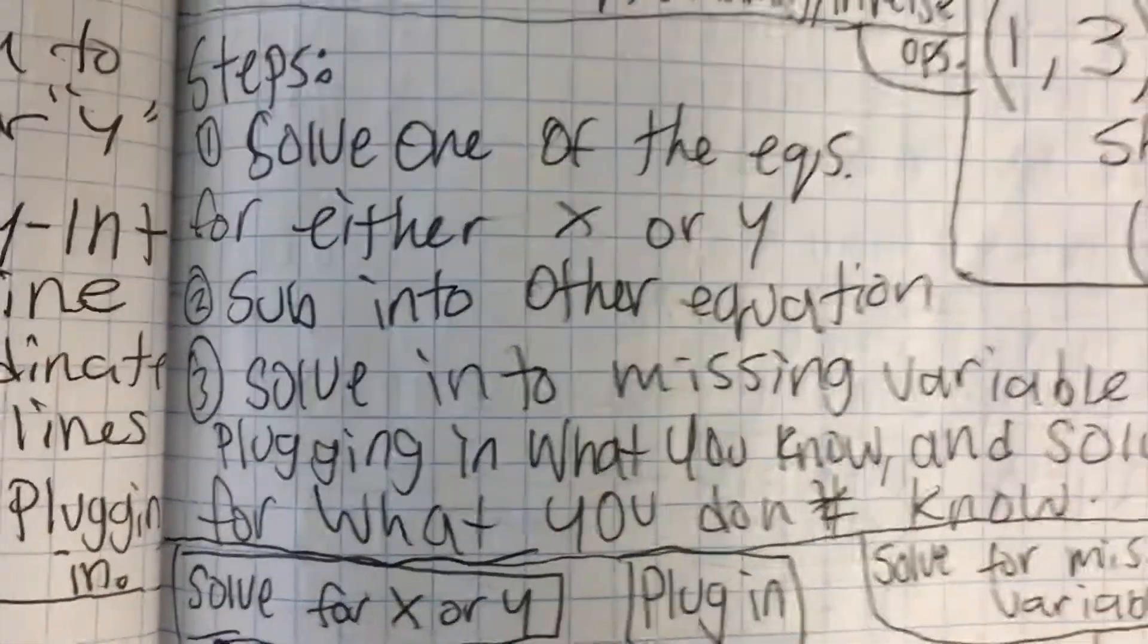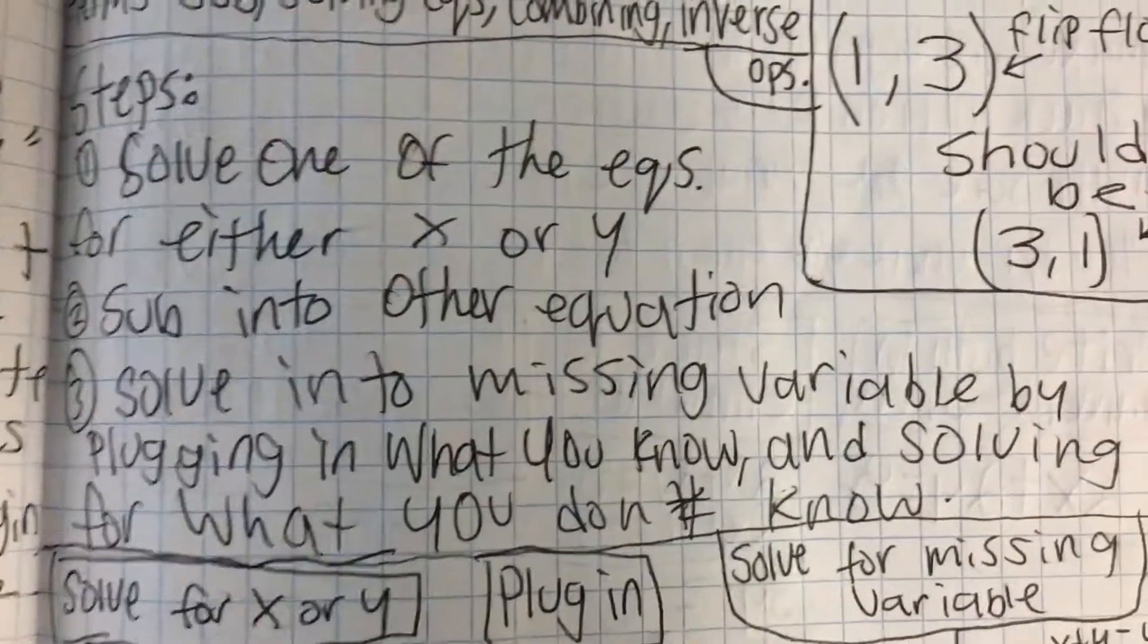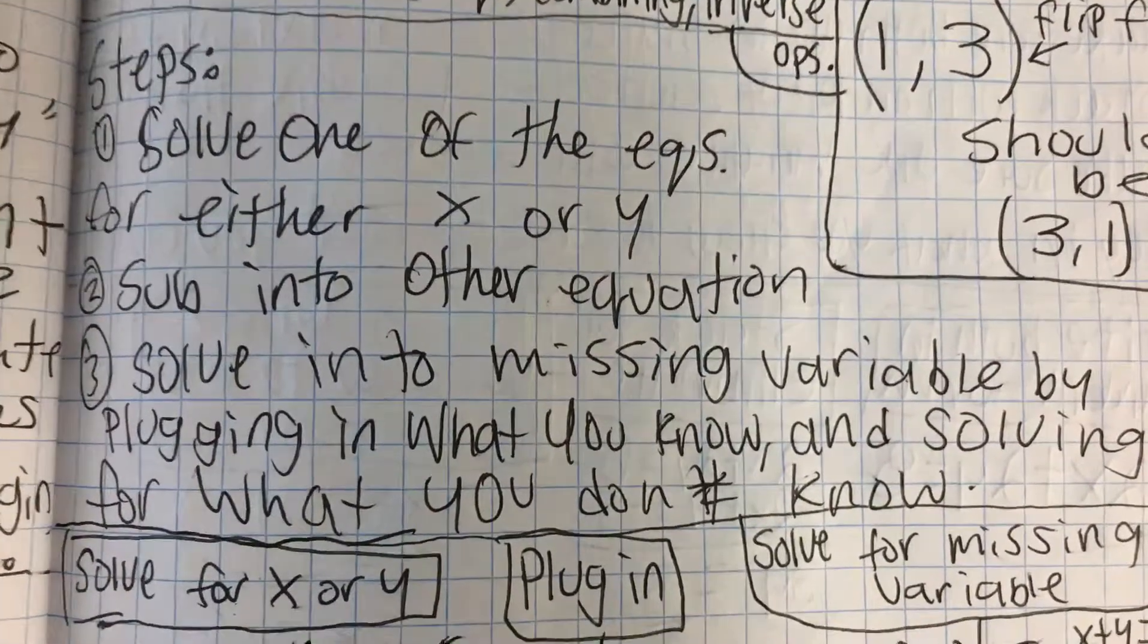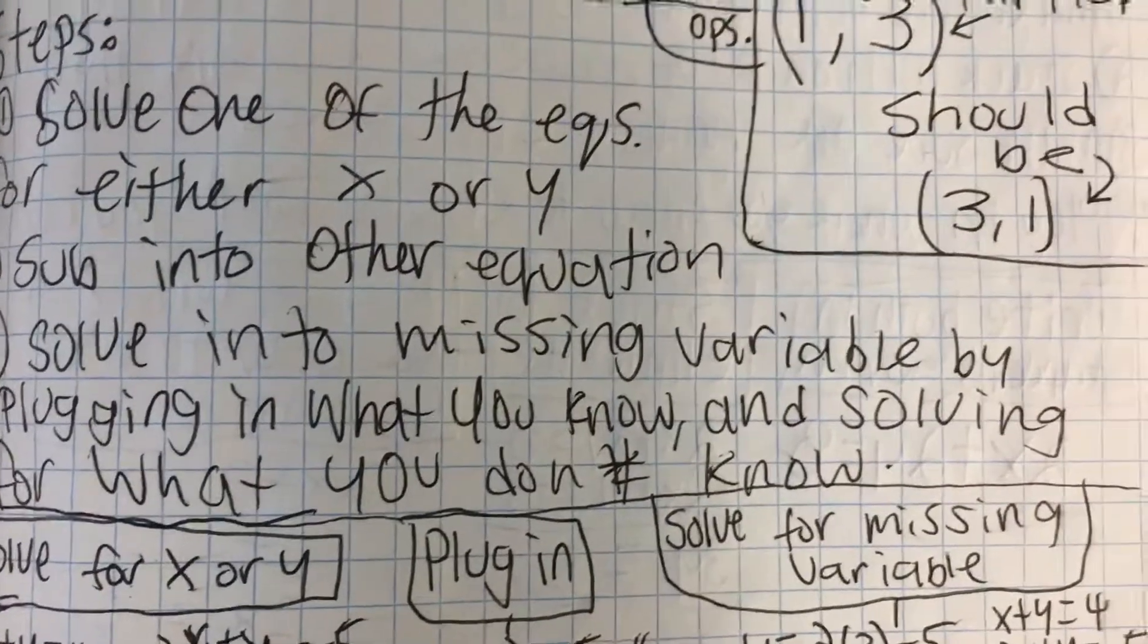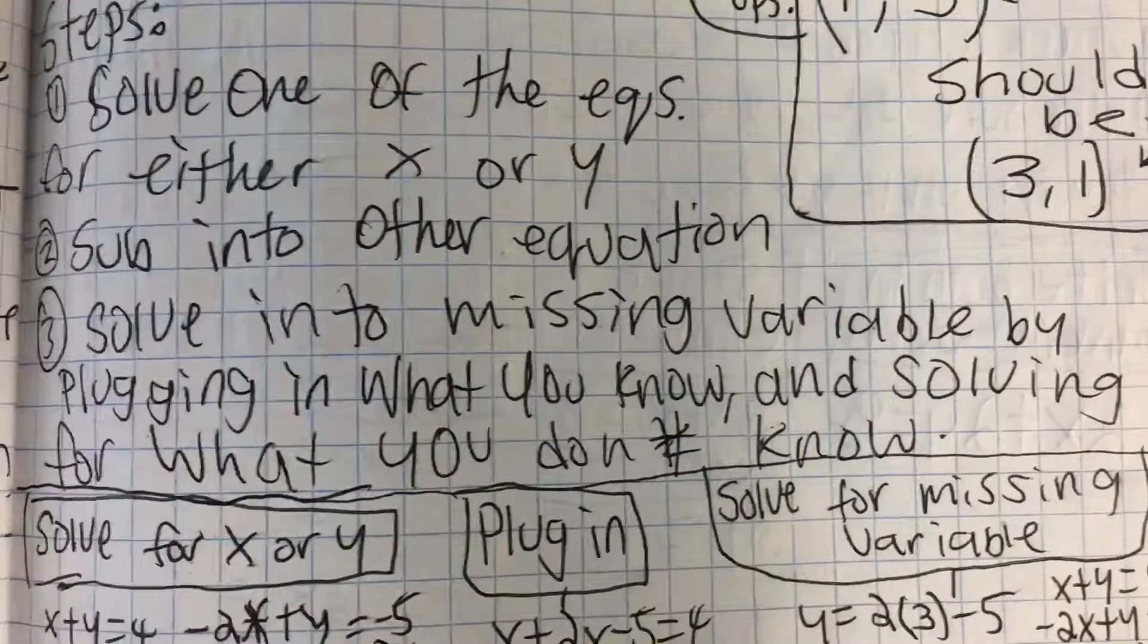Steps: solve one of the equations for either y or x. Substitute in the other equation. Solve for the missing variable by plugging in what you know and solving for what you don't know.